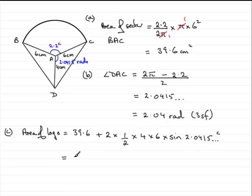And what you should find that you get is 60.9889 and so on. And if we round this to the accuracy that was asked for, the nearest centimeter squared, this would be 61 centimeter squared. So just putting brackets, to the nearest centimeter squared.